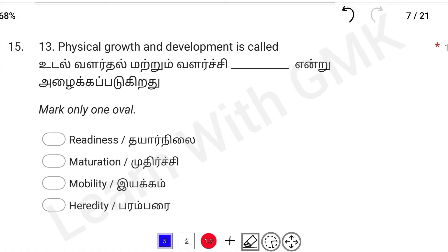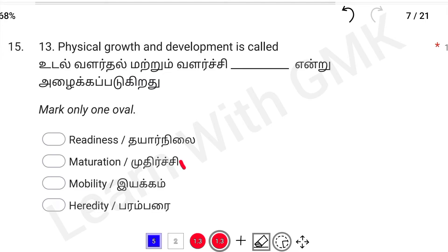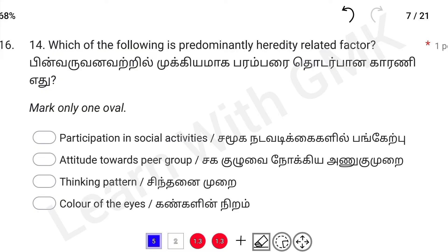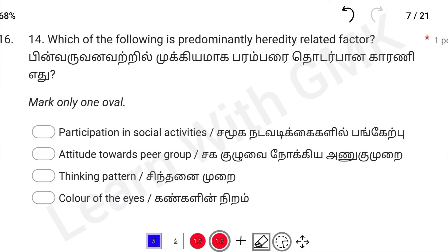Physical growth and development — our body will grow and develop. This is the principle of maturation. Which of the following is a predominantly heredity-related factor? In our own family, people have a family group. Eye color is an example of a heredity-related factor.